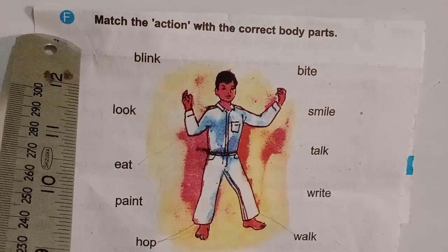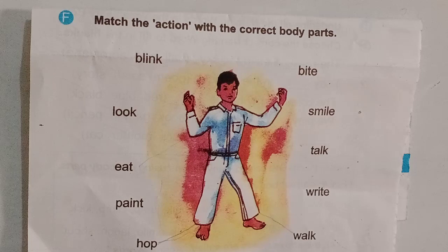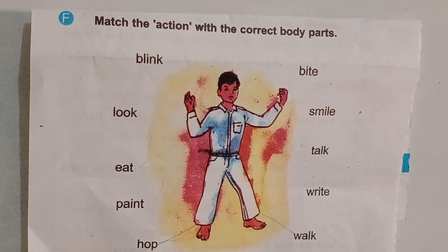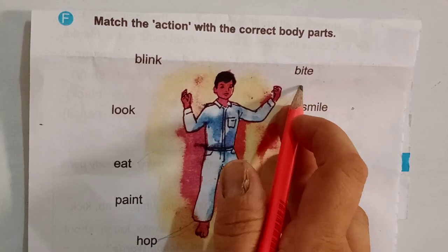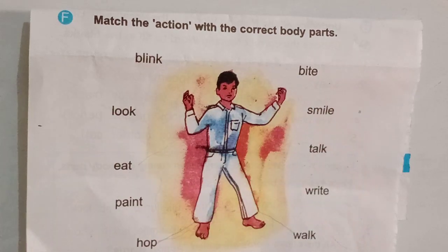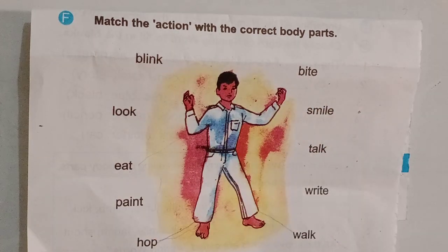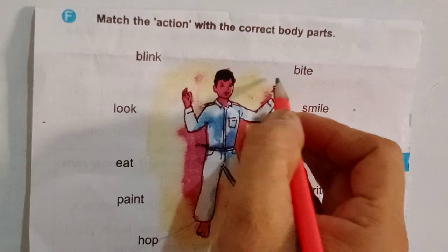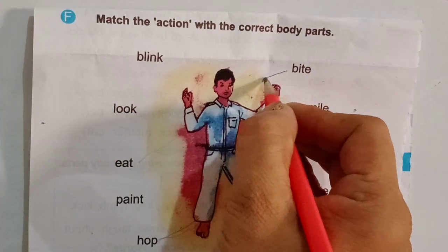Our next exercise is Exercise F of the grammar portion. Let's start the work. In this portion, we will match the actions with the correct body parts. For example, what is this? This is bite. Where do we take a bite? How can we take a bite?